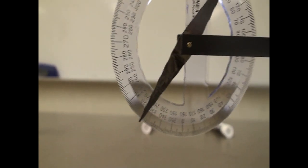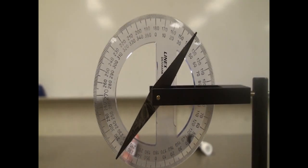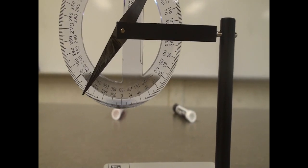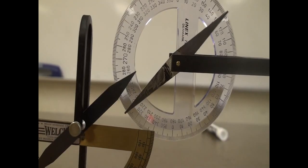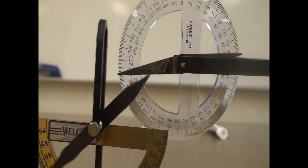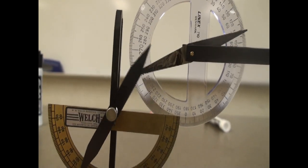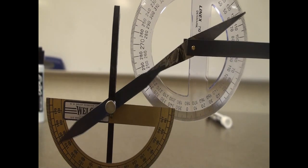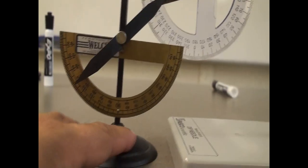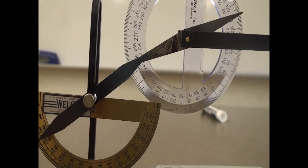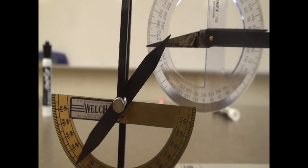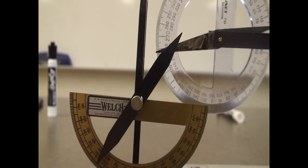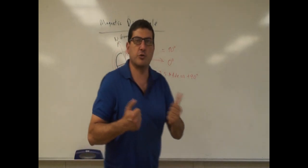If I bring the two compasses together, you can see this doesn't really work, because compasses are actually magnets. The two compasses attract each other and then line up — they want to touch each other. So you don't want to bring two compasses together, because they interact with each other.